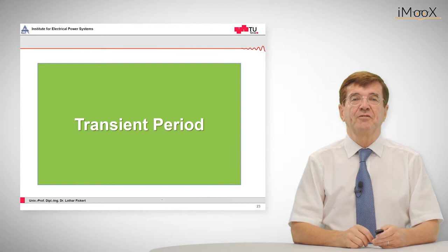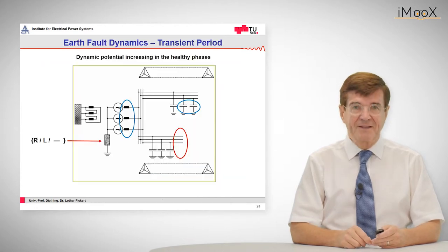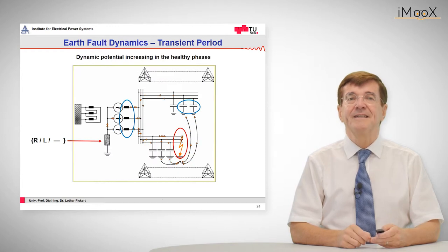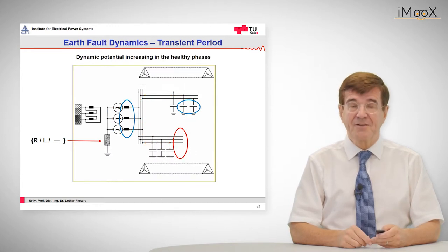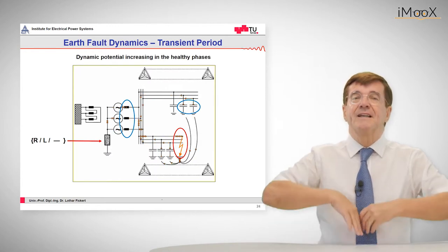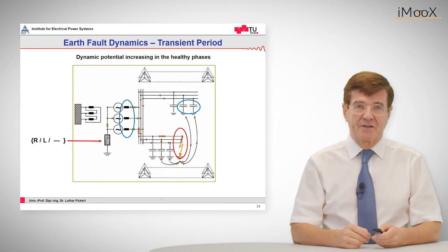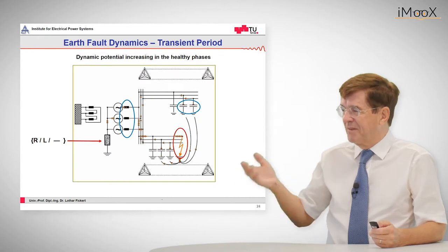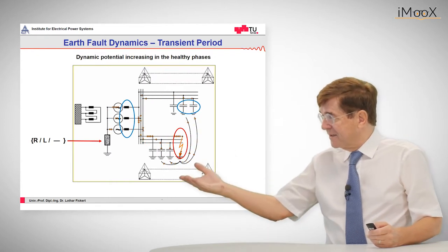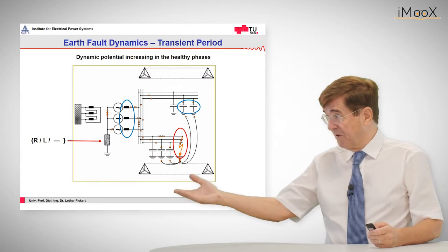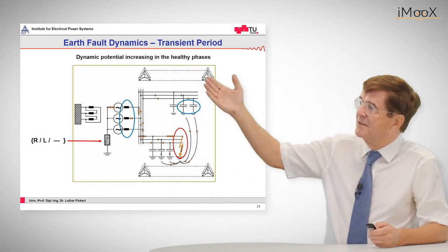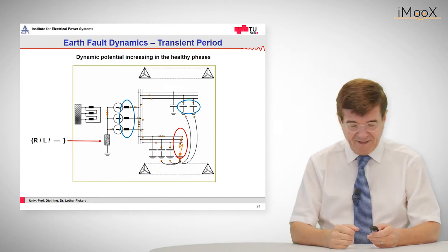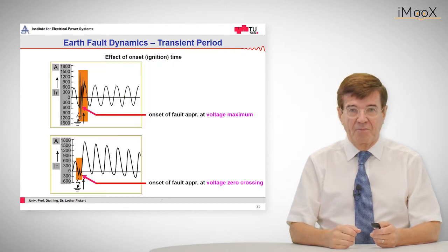Now let's check for the transient period. The transient period is characterized by the fact that the capacitances of the healthy phases get onto a higher voltage level. So they receive more energy and this energy is pumped into these capacitances by the capacitive current flowing from ground into the healthy feeder.